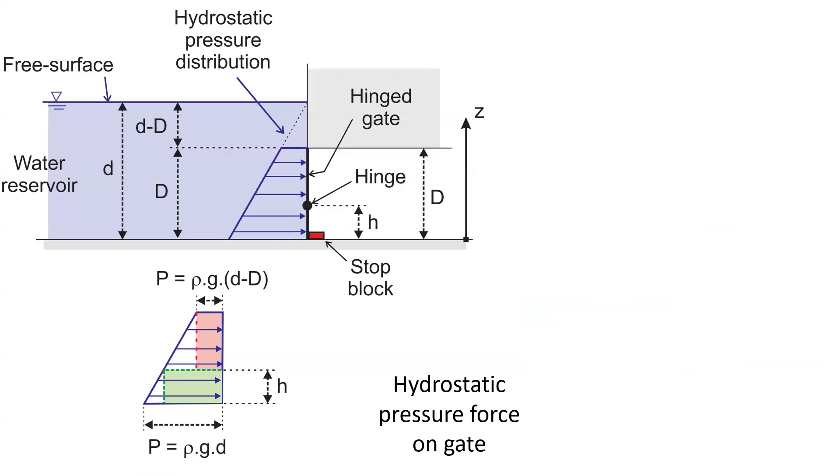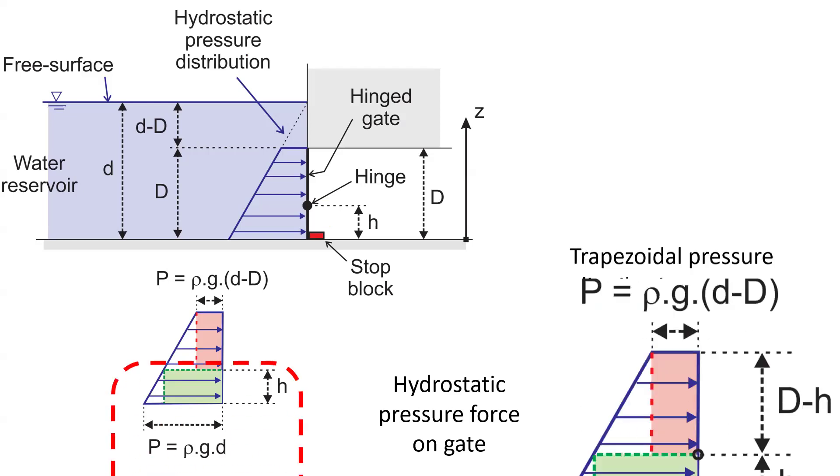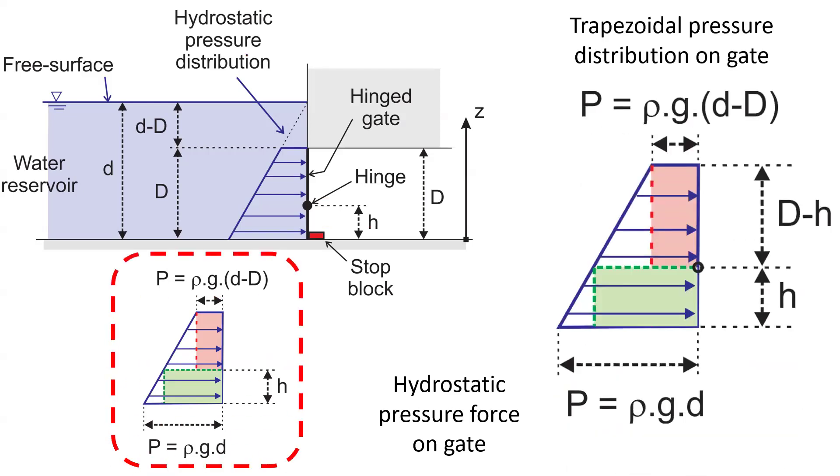However, we want to focus on the hydrostatic pressure force acting on the gate. And there, we have a hydrostatic pressure distribution that is trapezoidal with two components, one component acting above the hinge, highlighted by a red dashed rectangle plus a smaller white triangle, and the hydrostatic pressure component acting below the hinge with a green rectangle and a small white triangle.